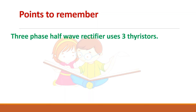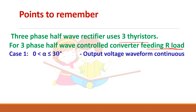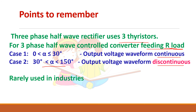Key points to remember: the three-phase half-wave rectifier uses three thyristors. For R load, there are two cases — when alpha is less than 30°, the output voltage waveform is continuous; when alpha is between 30° and 150°, it becomes discontinuous. This circuit is rarely used in industry; it is studied primarily to understand the full converter in detail.